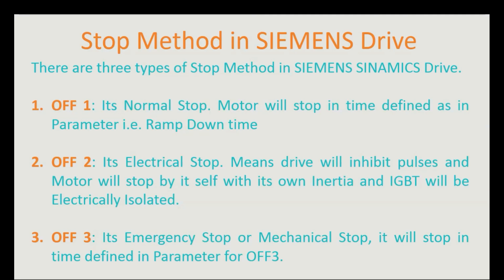OFF1 is a normal stop — the motor will stop within the ramp-down time configured during quick commissioning. OFF2 is an electrical stop, meaning the drive inhibits the pulses and the motor stops by itself based on its own moment of inertia; the IGBTs are electrically isolated from the drive. OFF3 is used as an emergency stop or mechanical stop to prevent mechanical damage when needed.